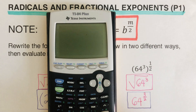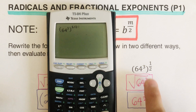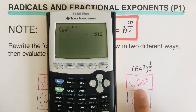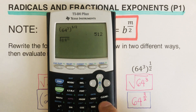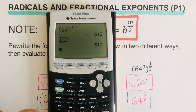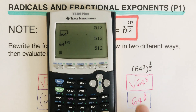Let's check using the calculator. First: 64 to the third power, raised to the exponent one-half — the answer is 512. Next: the square root of 64 cubed — that's also 512. Finally: 64 to the power three-halves — that's 512 as well. They all match!